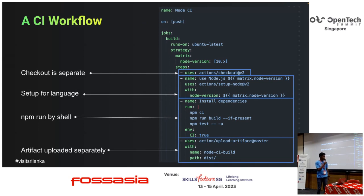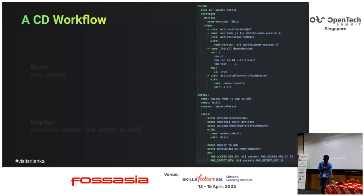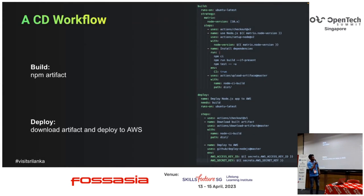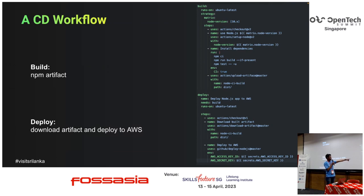Additionally, we have one more step where we upload the generated artifacts into a particular location. This is a typical CD workflow — the above steps build the artifacts, and the deploy steps download those artifacts from the directory we uploaded to. We are deploying to AWS. Here we have the secrets — they are not hardcoded; they are coming from the GitHub Actions built-in secret store.